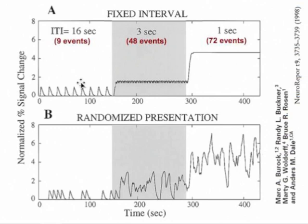When events are placed one second apart — 72 discrete events in the 144-second block — the signal simply climbs and saturates. In this simulation it's really just a flat line, so there's absolutely no evidence from this signal that there were 72 discrete events that gave rise to it.